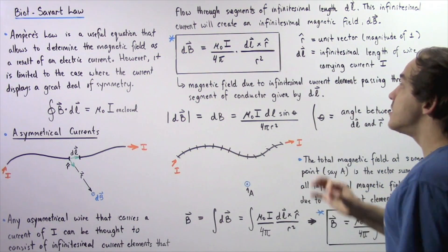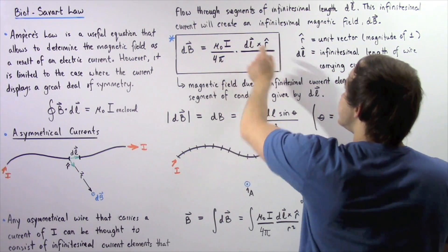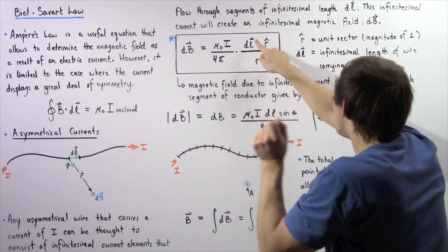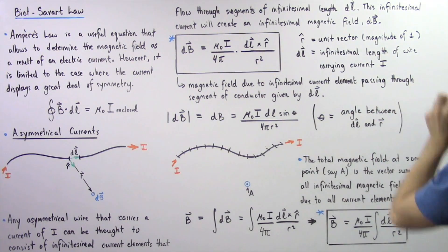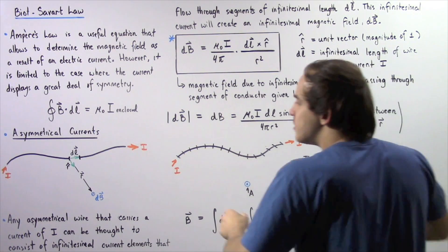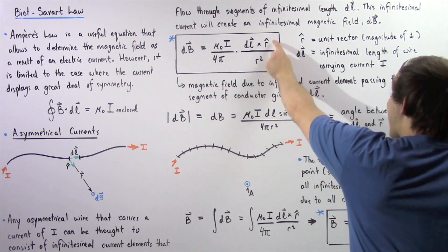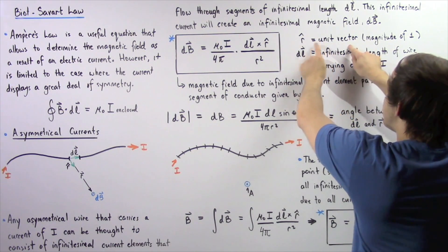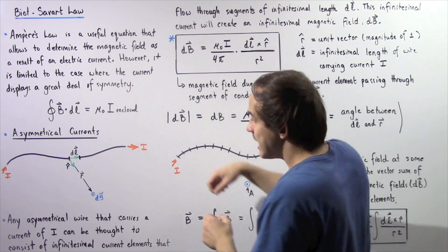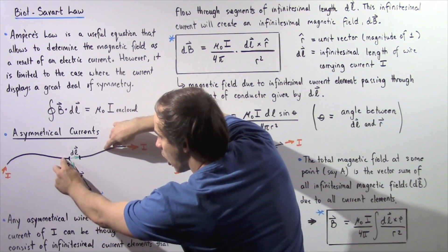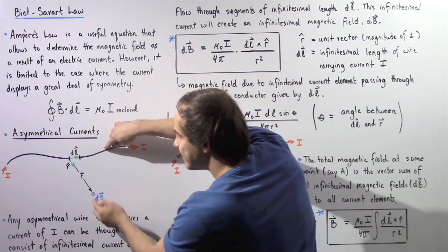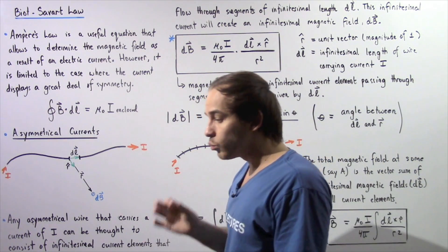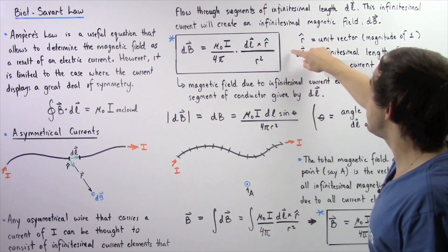This constant is multiplied by the vector cross product of our infinitely small segment DL and our unit vector R-hat, divided by R squared. DL is the infinitely small length of conducting wire carrying electric current I. R-hat is simply the unit vector with a magnitude of 1 that tells us the direction in which R points — shown by the green vector pointing in the same direction as vector R.